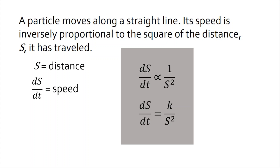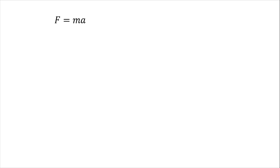This mathematical expression is a good model that best describes the relationship of speed and distance. This well-known equation is the mathematical model of Newton's second law of motion, which states that the time rate of change of momentum of a body is equal to the resultant force acting on it. Dividing m to both sides gives us a is equal to f over m.